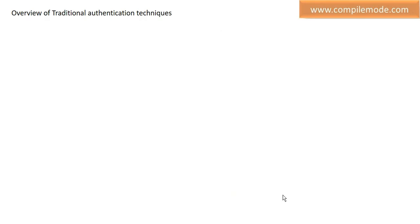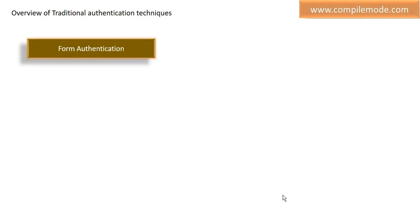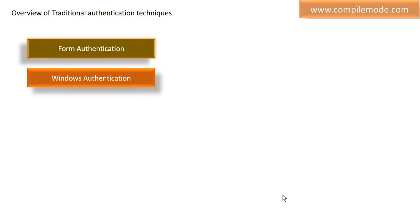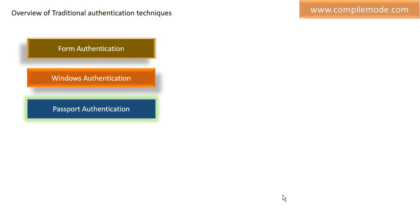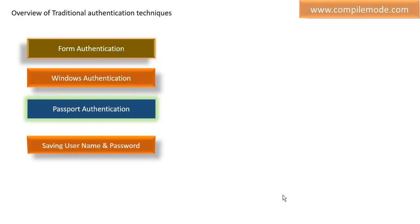Overview of traditional authentication techniques. There are lots of traditional ways to authorize or authenticate users. First is form authentication — this is covered in my previous or next videos. Next is Windows authentication. We can authenticate a user using Windows authentication. There is also a traditional technique known as Passport authentication, and saving username and password. Most commonly, users are authenticated from a database by storing username and password. Most people directly store the username and password into the database and validate those credentials from the UI. So these are the traditional authentication techniques, which have been used for a long time in web and Windows applications.